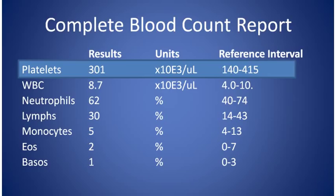The platelet count is the next component of the CBC. If the platelet count is too low — thrombocytopenia — a person can be at risk of serious bleeding. If the platelet count is too high — thrombocytosis — a person can be at risk of abnormal blood clots such as deep venous thrombosis or pulmonary embolus. Deep venous thrombosis is a blood clot that forms in a vein of the legs; pulmonary embolism is a blood clot that forms in the blood vessel of a lung.